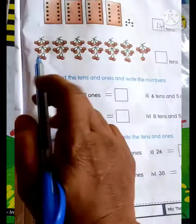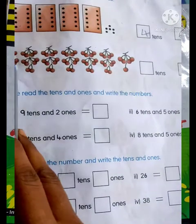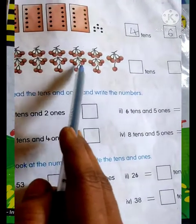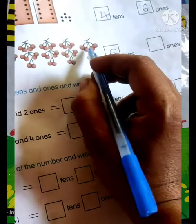Next picture is cherries. Count: 1, 2, 3, 4, 5, 6. So 6 tens and 1, 2, 3, 4, 5 ones.